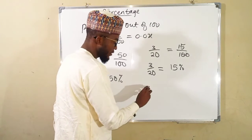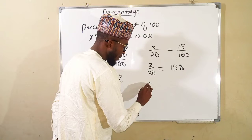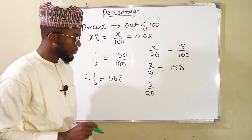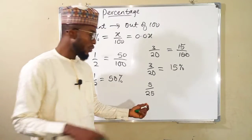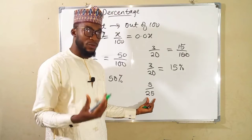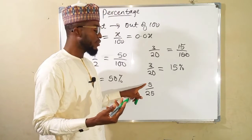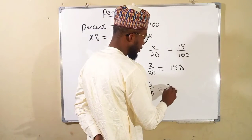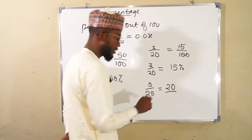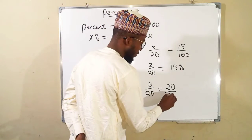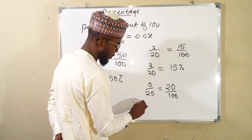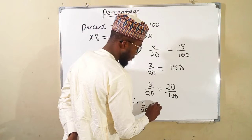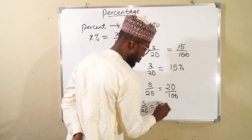Now we want to convert 5 over 25 into percentage. We know that if we multiply 25 by 4 we get 100, and we equally multiply the numerator by 4. 4 times 5 is 20, and 25 times 4 is 100. Therefore, 5 over 25 is the same thing as 20 percent.